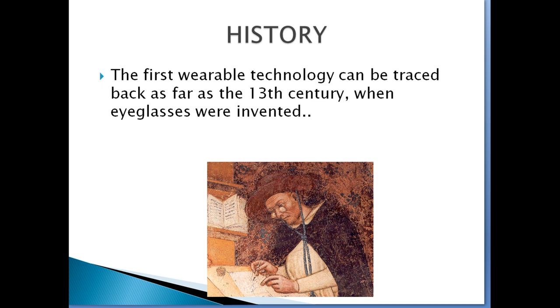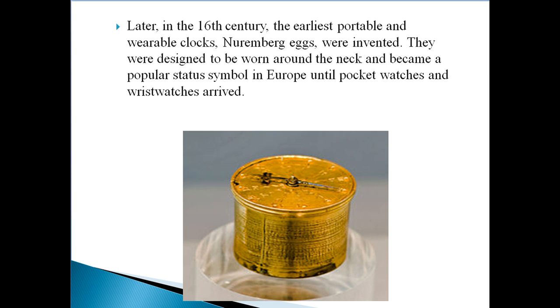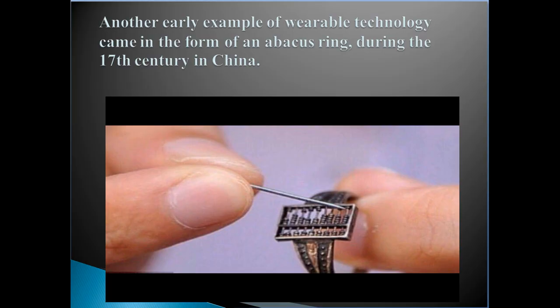Now let us see the history of wearable technology. Depending on the definition used for technology, the first wearable technology can be traced back as far as the 13th century, when eyeglasses were invented. Later, in the 16th century, the earliest portable and wearable clocks — Nuremberg eggs — were invented. They were designed to be worn around the neck, and became a popular status symbol in Europe until pocket watches and wrist watches arrived. Another early example of wearable technology came in the form of an abacus ring during the 17th century in China.